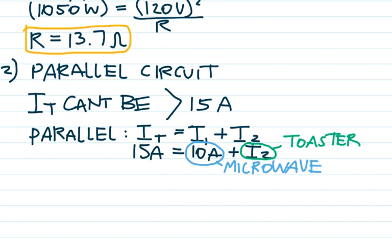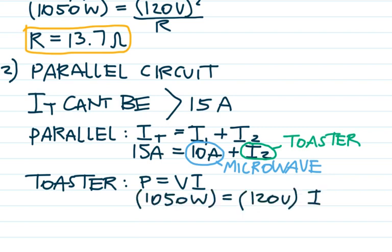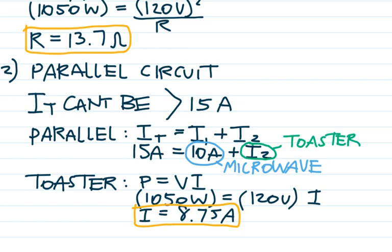Let's solve for the current through the toaster. The power rating of the toaster is still 1050 watts and the resistance is 13.7 ohms. It's a parallel circuit, so the voltage for everything is 120 volts. Using P equals VI for the toaster, I solve for the current and get 8.75 amps. The microwave is at 10 amps; add them up in parallel and you get 18.75 amps — too much for a 15-amp circuit.